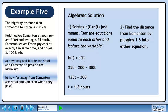We can find the distance from Edmonton by plugging 1.6 into either equation. In this example, we'll use Heidi's equation. Plugging in 1.6 hours for time gives a distance of 40 kilometers.